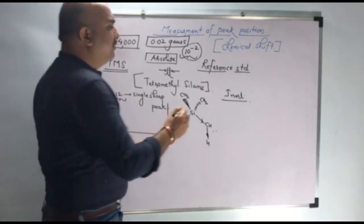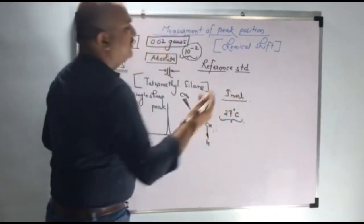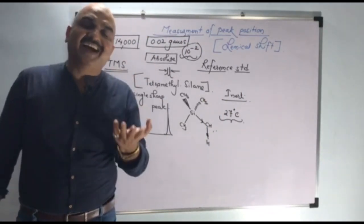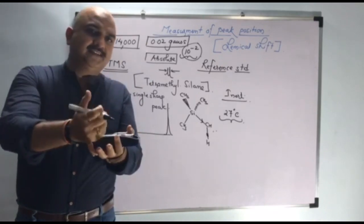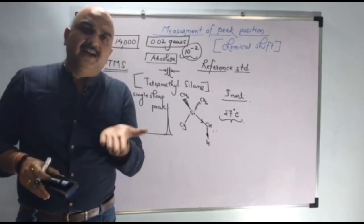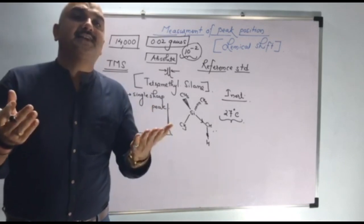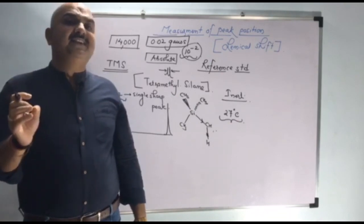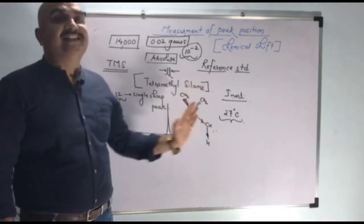The last and most important point: TMS has a boiling point of 27 degrees centigrade, so it is highly volatile. When you mix it with your compound — as it is inert, it will not react — and after you get the NMR, when you bring the sample back, it is easily evaporated at 27 degrees centigrade. Because of all these properties, we use TMS as the reference standard.